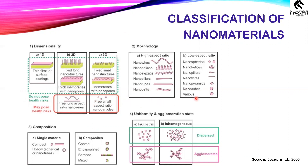Nanomaterials can also be classified based on their structure, that is morphology, as spherical, wires, helices, zigzags, pillars, tubes, nanobells or pyramids, nanocubes, etc. Then depending on the composition of the nanomaterials, they can be classified as single — which can be compact or hollow — or composites. That is, they can be coated with other kinds of substances, encapsulated by other substances, or a combination. Based on their uniformity and agglomeration state, the isometric and inhomogeneous forms of nanomaterials can be classified as dispersed and agglomerates based on how they are dispersed in the environment.